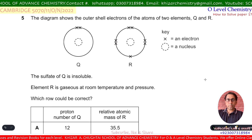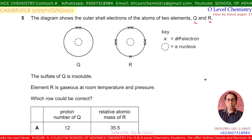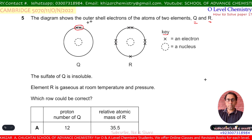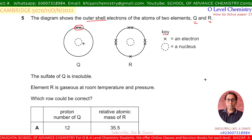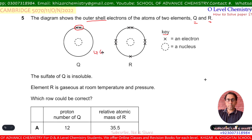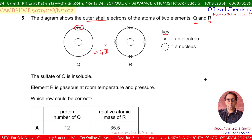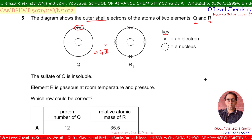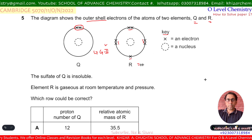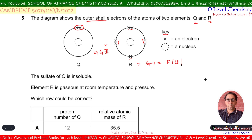Question number 5. The diagram shows the outer shell electrons of two elements Q and R. Q has only two electrons in its outer shell, so it may belong to Group 2 or be a transition element. R has seven outermost electrons, so it belongs to Group 7 — it may be fluorine, chlorine, etc.